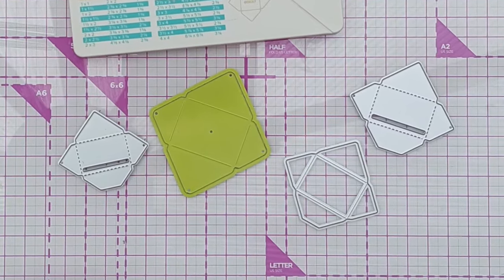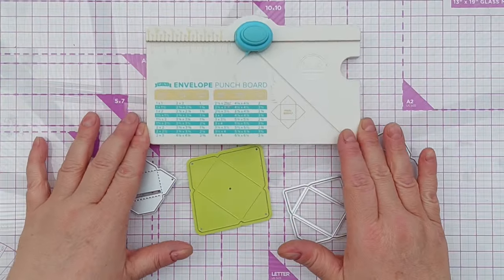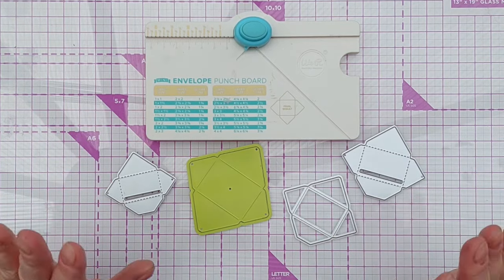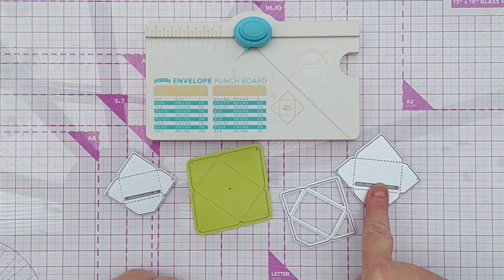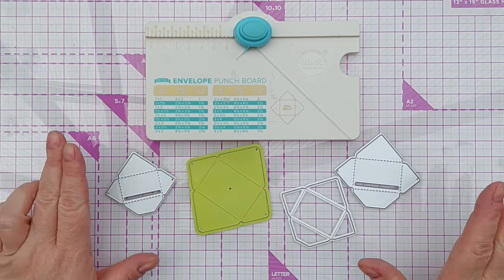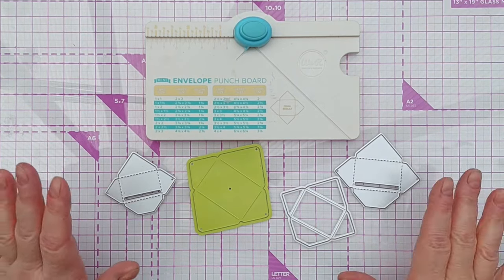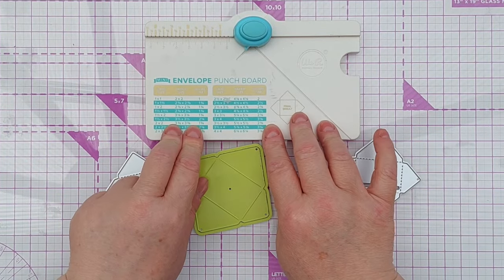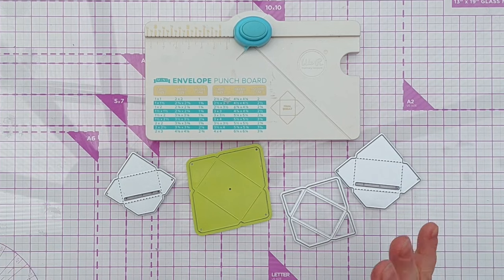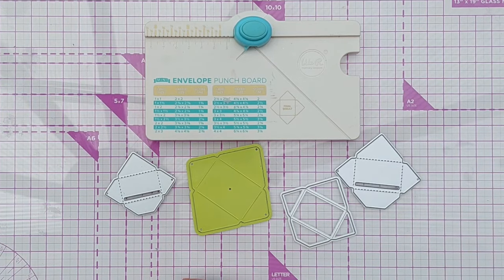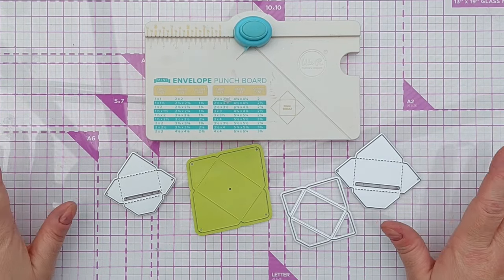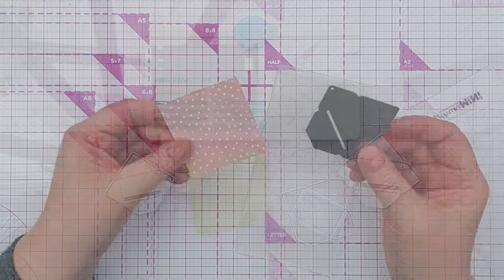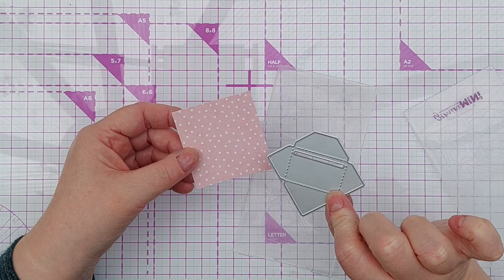I've got my envelope punch board here, and what I do today, I'm going to use this one. This envelope die can be done with anything like this, so if you've got any envelope die, an envelope punch board, or another method entirely of making little envelopes, you should be able to do this. You don't need to rush out and buy this die.